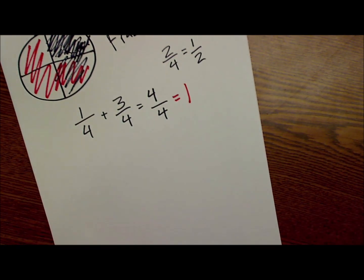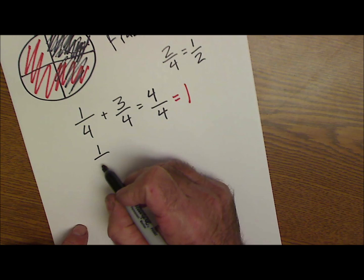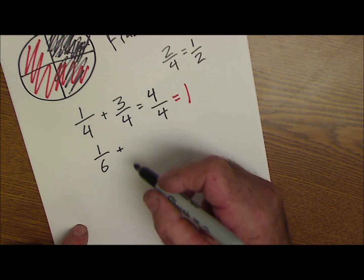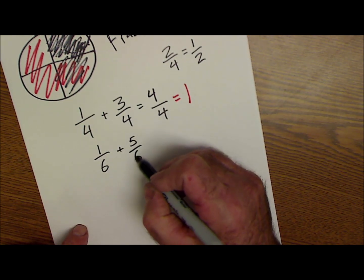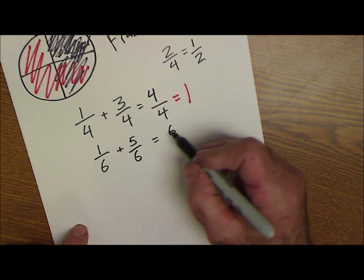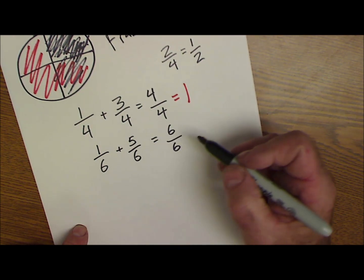So if I have say one-sixth plus five-sixths, I add across the top to get six, bottom is still six.